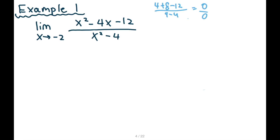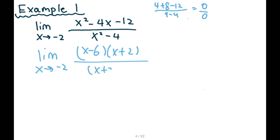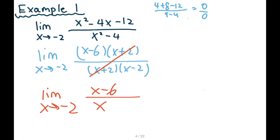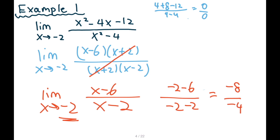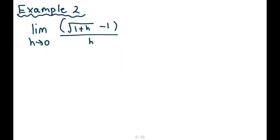Then let's take a look — x squared on top, x squared on bottom. Looks like we can factor. Limit as x approaches negative two: (x − 6)(x + 2) on top and (x + 2)(x − 2) on the bottom. We see a common factor — cancel that out. Now limit x goes to (x − 6) / (x − 2). Plug in negative two: negative two minus six over negative two minus two — negative eight over negative four — we get two.